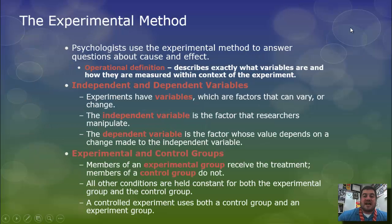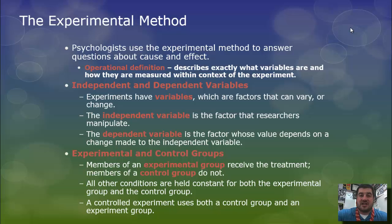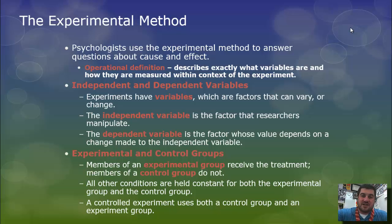In psychology, we use the experimental method to answer questions about cause and effect. Remember, correlation does not reveal cause and effect. It only reveals relationships between two items — positive and negative. The experimental method is how we answer questions about what causes something.